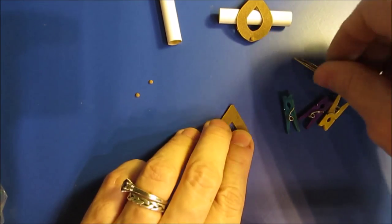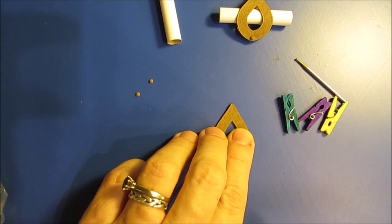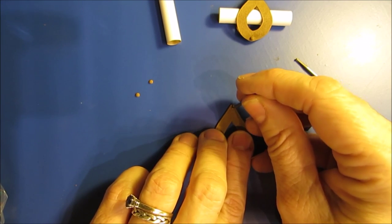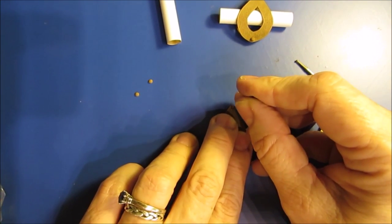You don't want to use binder clips because they're a little too strong. You want something that's going to hold them together, but you don't want to dent the clay. So first thing I'm going to do is put a little hole in both of them.